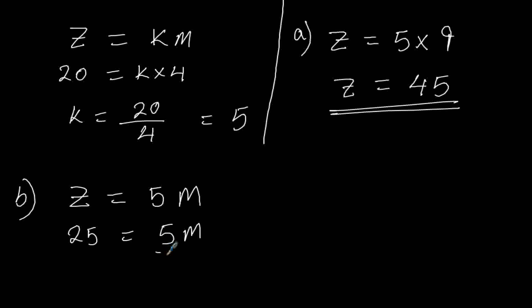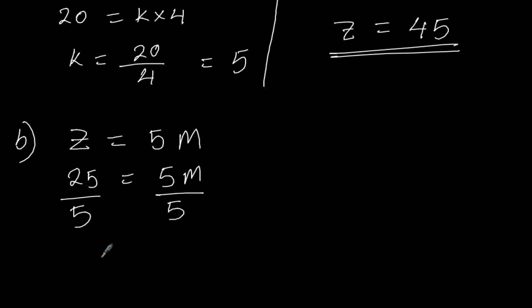So to find the value of M, I have to divide both sides by 5. That will give us M being equal to 5, because when I divide 25 by 5 I get 5. So that will be the value of M when Z is 25. Those are our two answers, thank you.